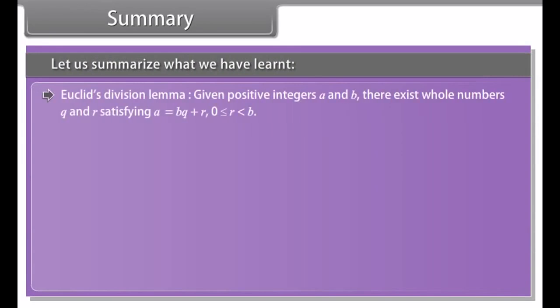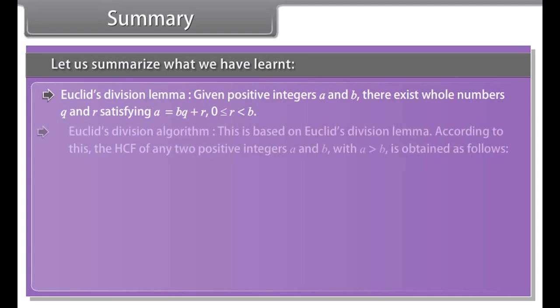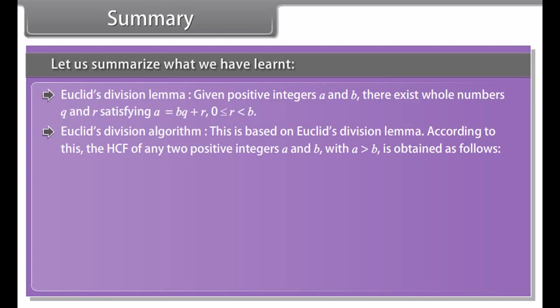Did you know? In the 17th century, Descartes introduced the term 'real' to describe roots of polynomials, distinguishing them from imaginary ones. Karl Friedrich Gauss is often referred to as the Prince of Mathematicians and is considered one of the three greatest mathematicians of all time, along with Archimedes and Newton, having made fundamental contributions to both mathematics and science.